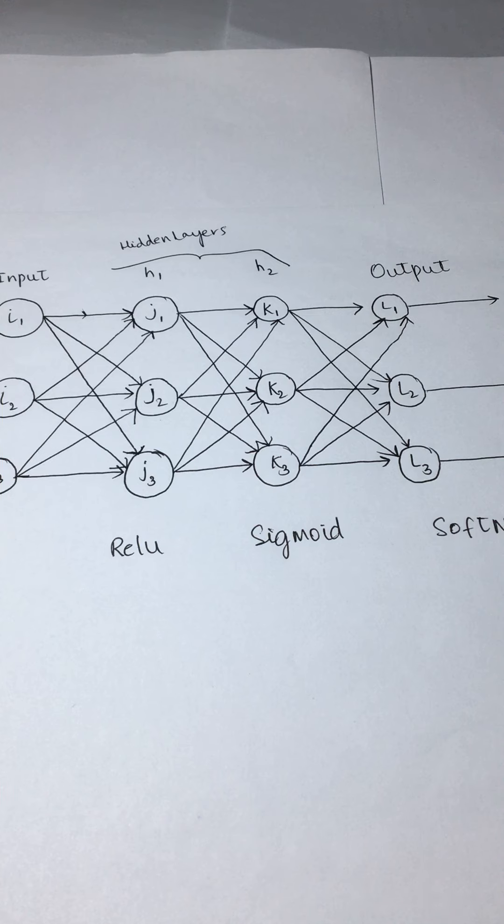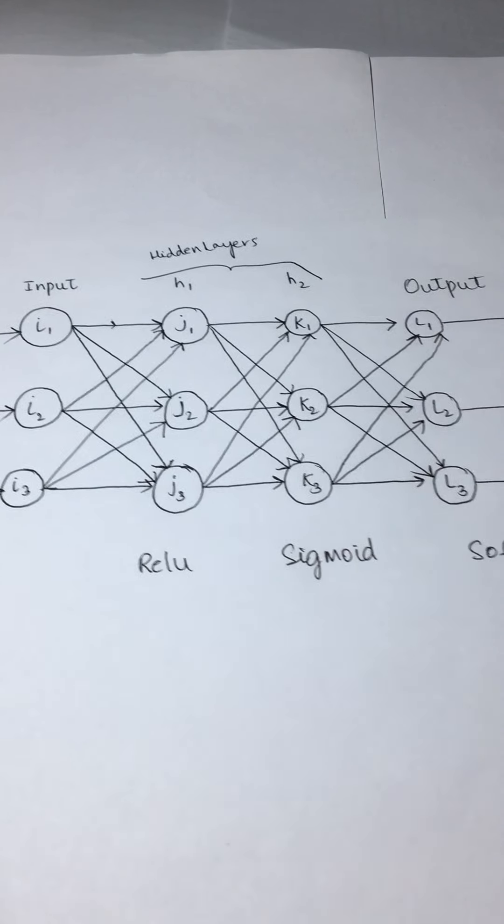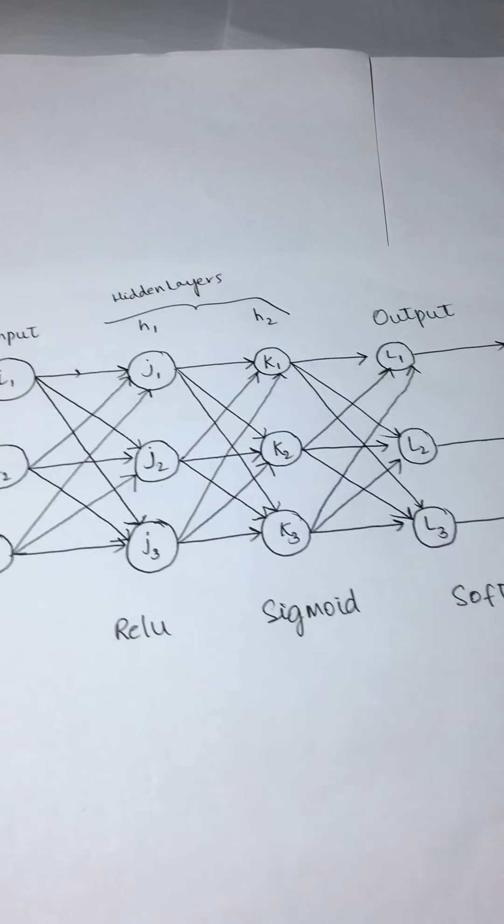What we've seen over the past few sessions is how to calculate forward pass. We've taken a toy example with initial inputs and weights. We randomly created weights, then calculated forward pass from the input to hidden layer 1, hidden layer 1 to hidden layer 2, then finally output. This is your forward pass.